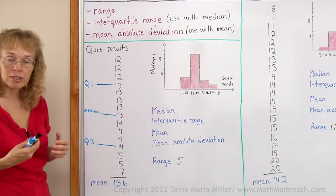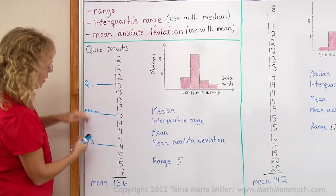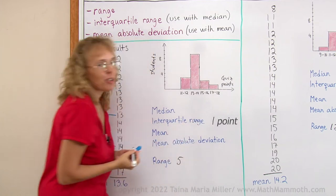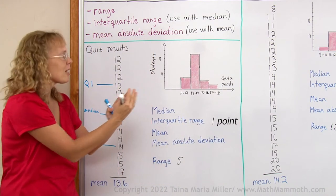And the interquartile range is when I subtract this and this. 13 and 14. It is only one. And of course, that is indicating how close together the data items are.